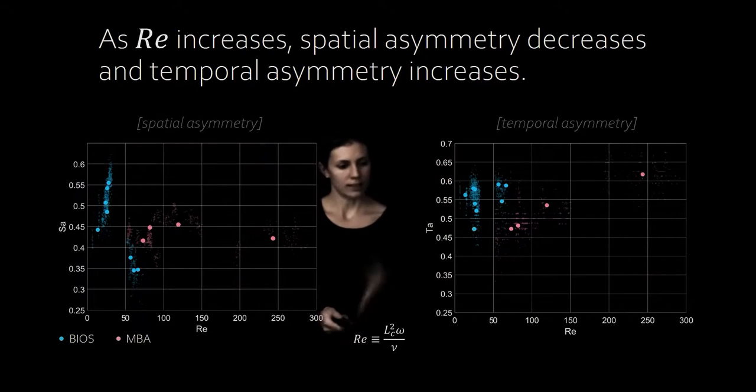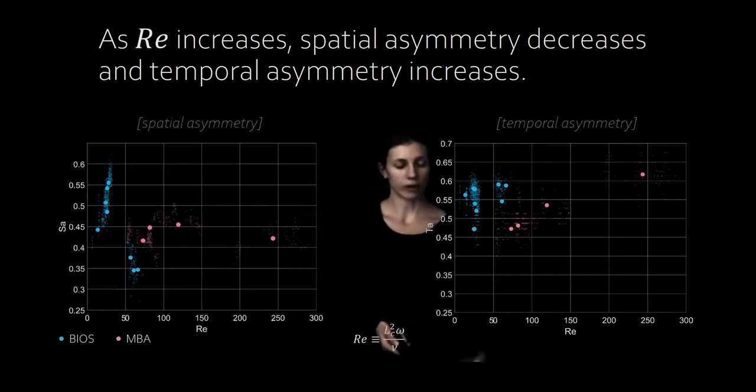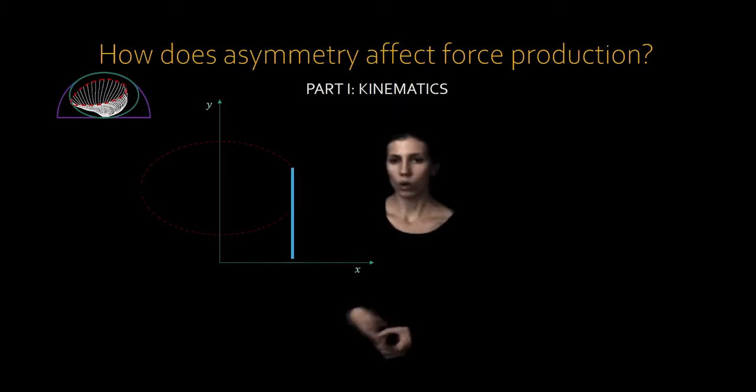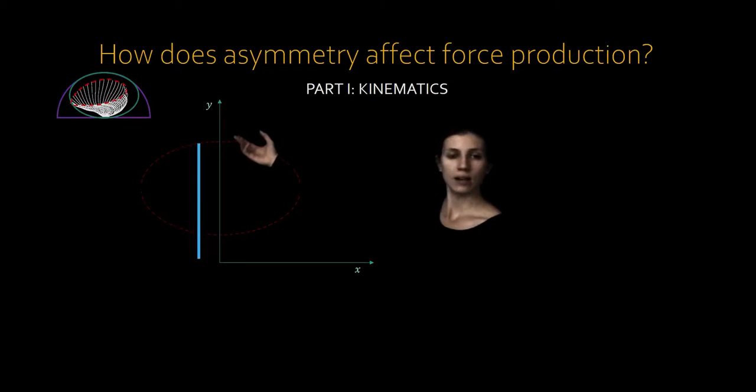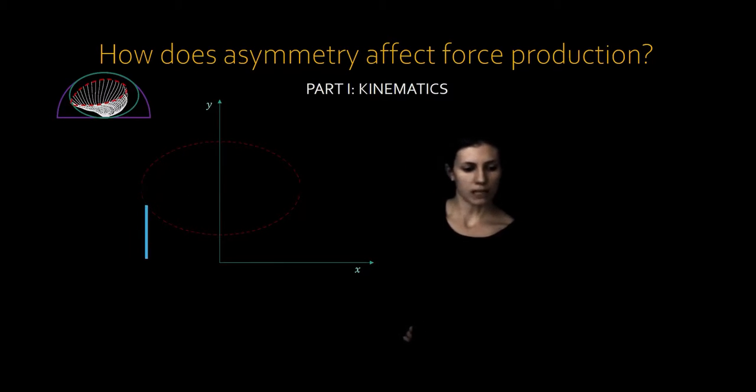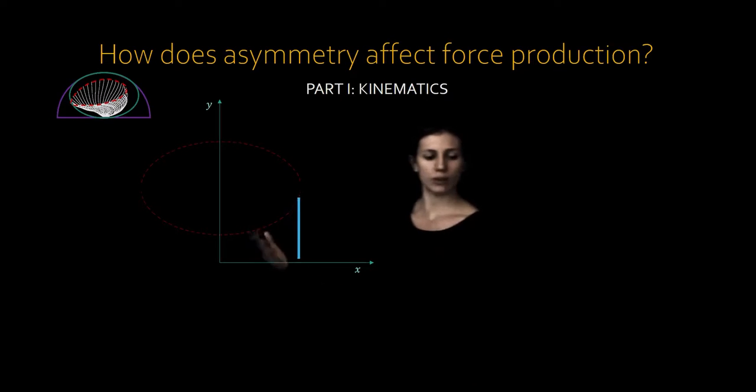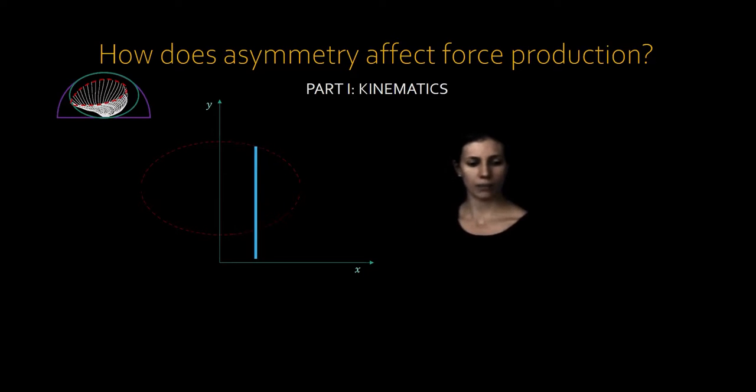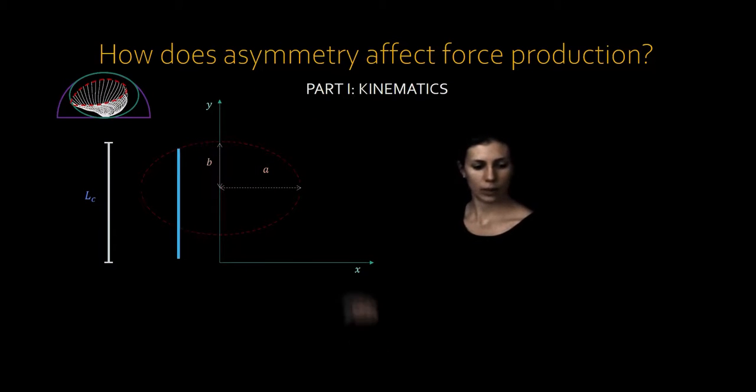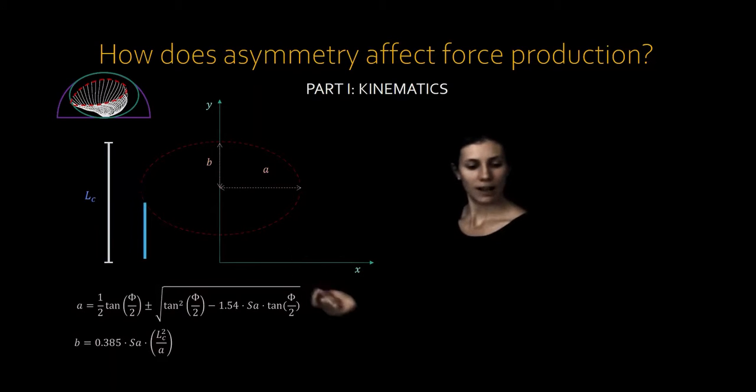This is a cool observation but ideally we would like to understand and explore this problem more mechanistically to better understand the physics. So we're going to build a very simple mathematical model of the ctene row. The real ctene moves in a complex pattern, but we want to simplify this motion as much as possible while still capturing the essential qualities. We're going to model the ctene as a moving flat plate whose area changes with time. We're going to make the tip trace out an elliptical path similar to the real ctene tip and manipulate the geometry of that ellipse to change the spatial asymmetry and change the speed at which the tip goes around it to change the temporal asymmetry.